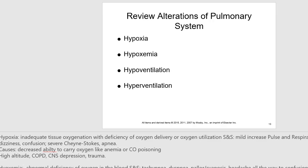Hypoxemia is an abnormal deficiency of oxygen in the blood. Signs and symptoms include tachypnea, dyspnea, pallor, cyanosis, headache, confusion, lethargy, hyperactive reflexes, or coma. Causes include decreased diffusion of oxygen from the lung — such as pneumonia or atelectasis — or shunting of blood to the left side of the heart without gas exchange in the lungs, which can occur in ventricular fibrillation or asystole.